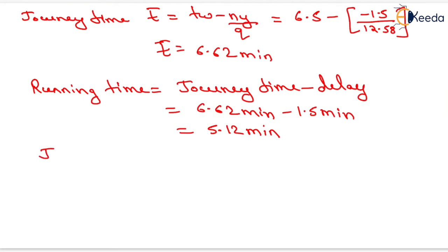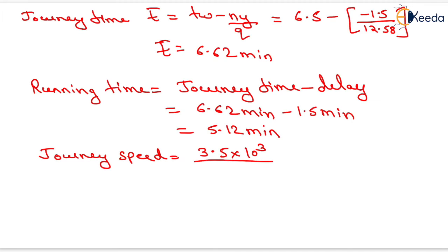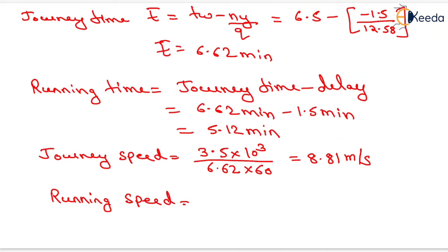Journey speed equals the length of travel, 3.5 km (converted to 3500 m), divided by journey time 6.62 minutes converted to seconds (multiplied by 60), giving 8.81 meters per second. Running speed equals 3500 m divided by running time 5.12 minutes converted to seconds, giving 11.39 meters per second. These are the journey speed and running speed for the north-south direction.